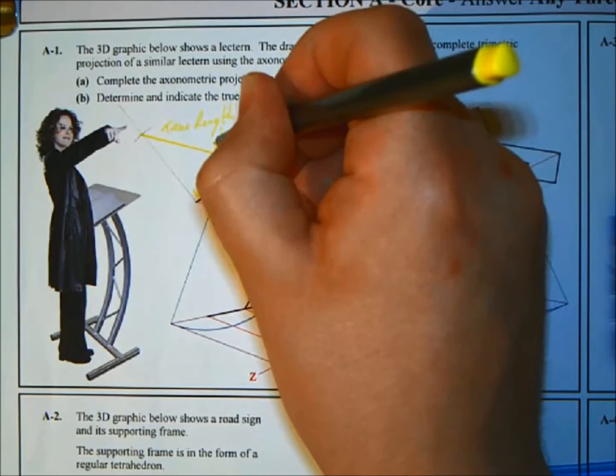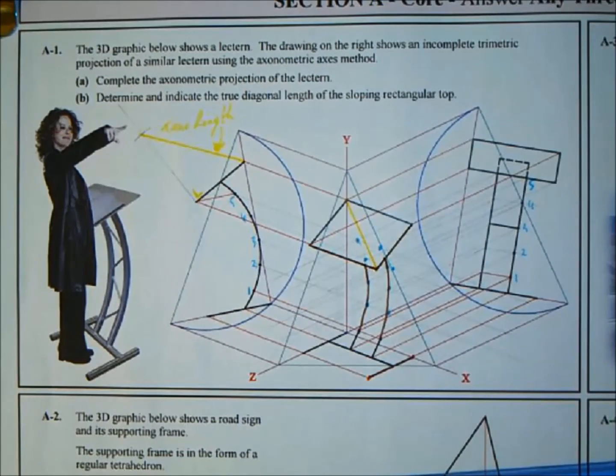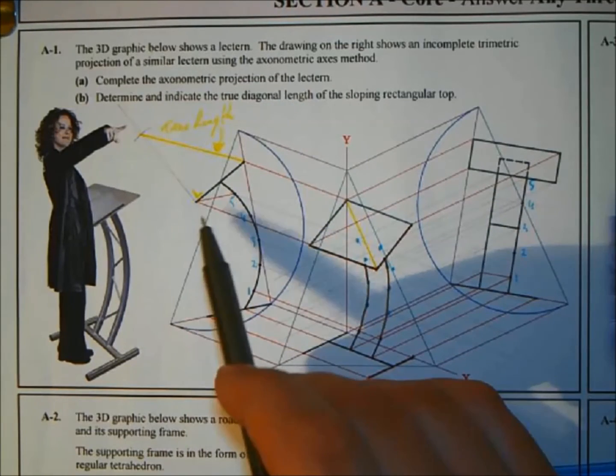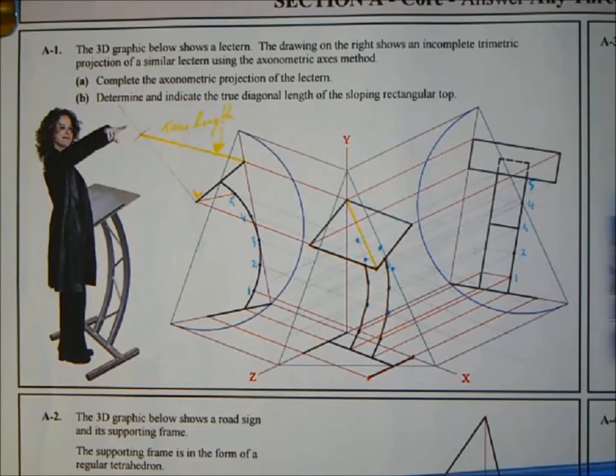So read the question carefully. It was determine and indicate the true diagonal length, not the horizontal, vertical height of it, length or height of it. It was the diagonal length, so make sure you read the question correctly.